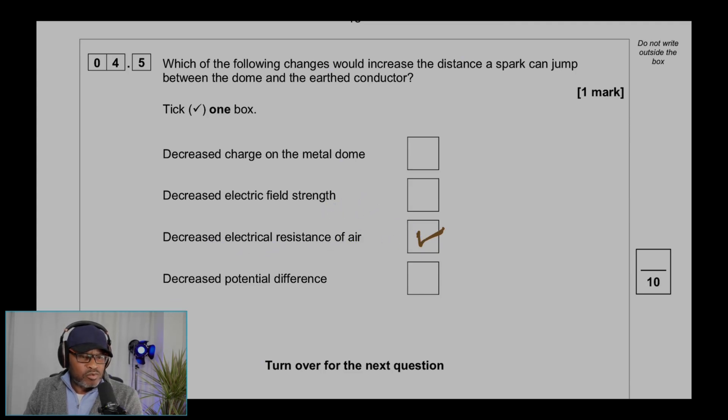Because air molecules absorb the electrons as they jump. If there's anything in the air, electrons will react with those things as they jump across. But if you decrease the electrical resistance of air, more electrons will be able to jump across.